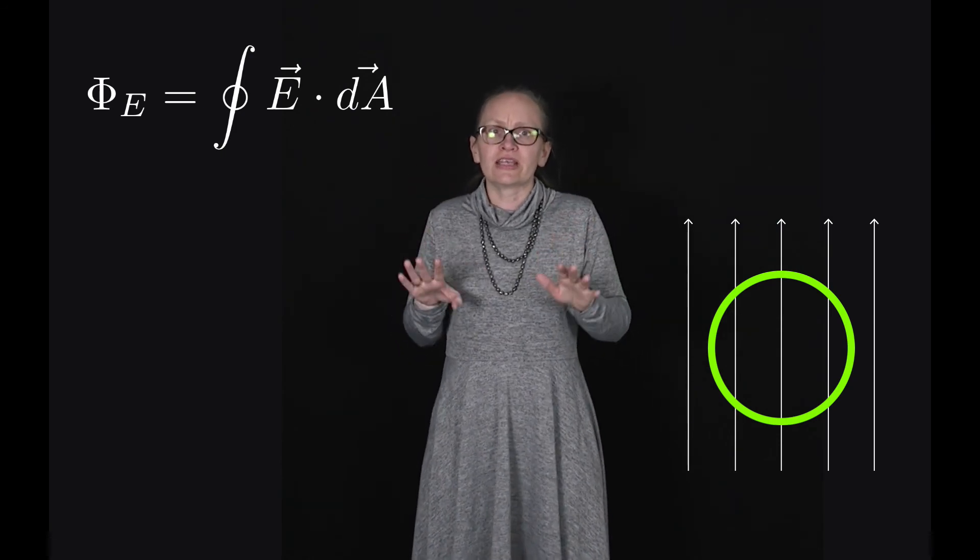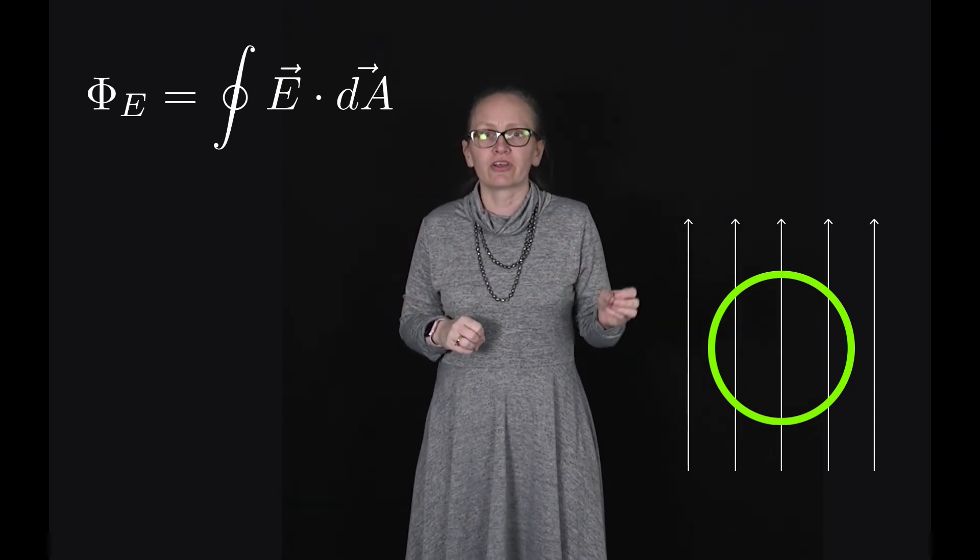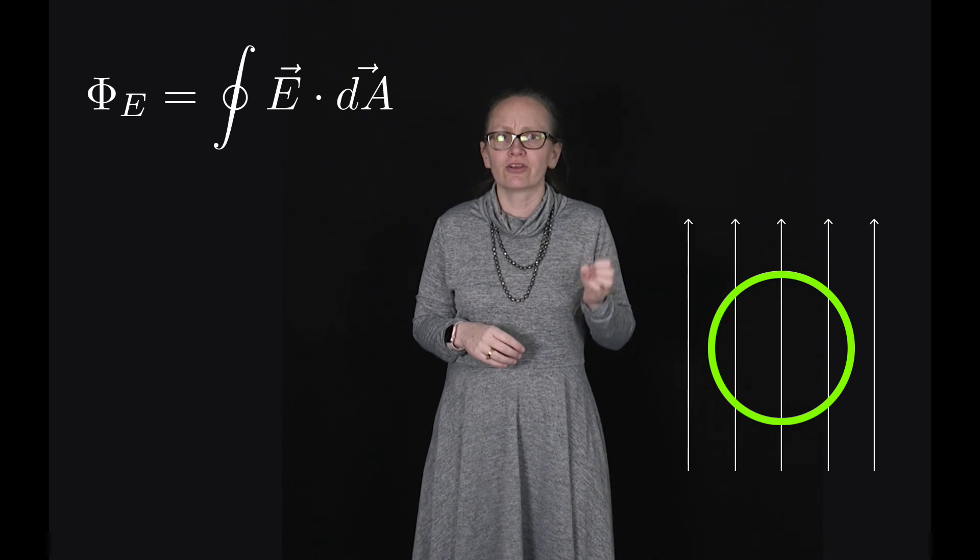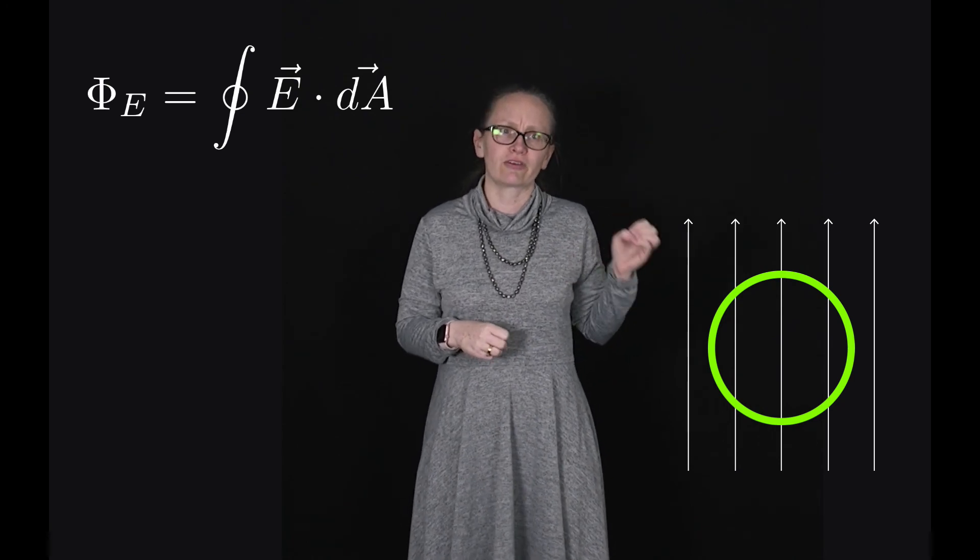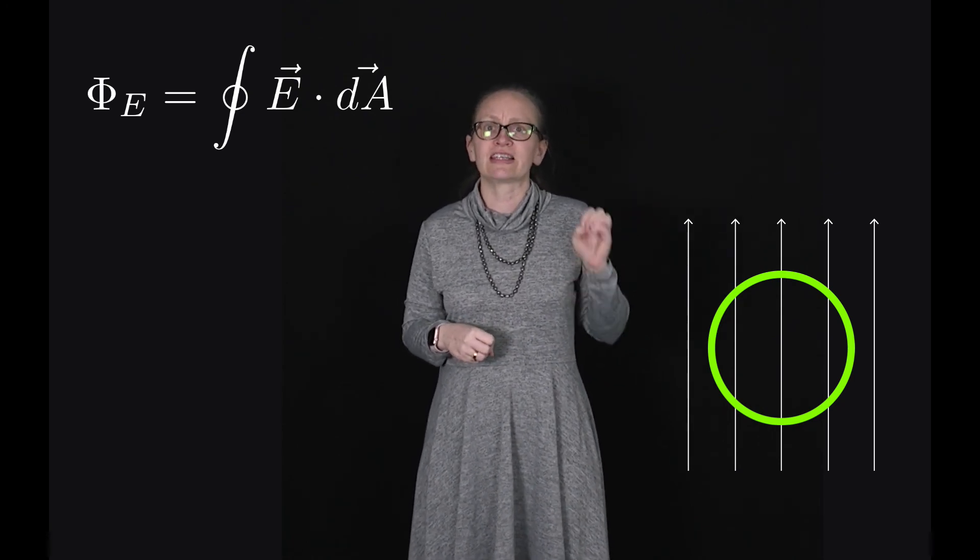Now before you continue I've got a little challenge for you. Can you think of a closed surface in a uniform electric field through which the flux is not zero?